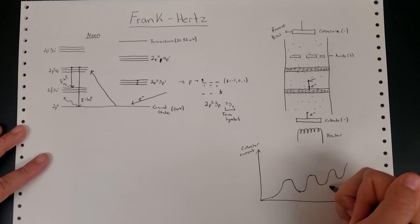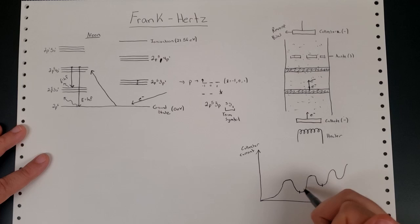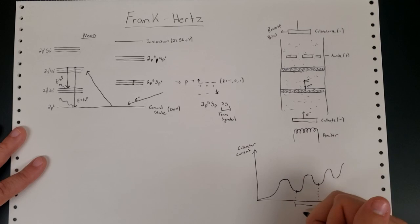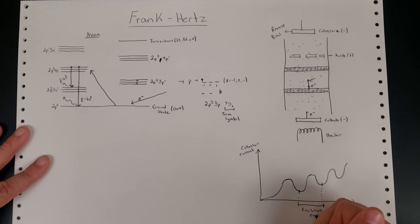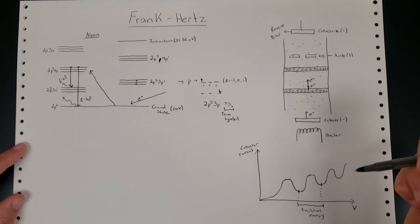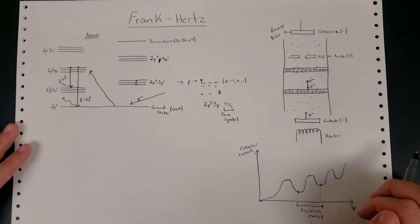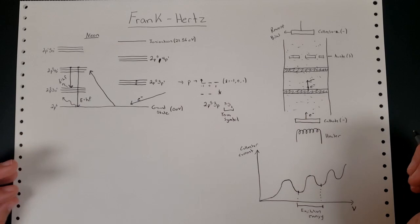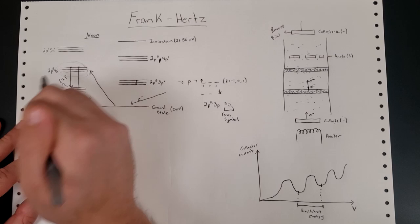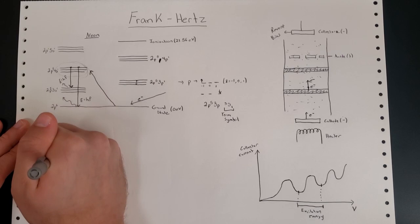From this graph, what we can determine is that the separation between any two corresponding points — for instance from one trough to another trough — is actually going to be equal to the excitation energy. It's the amount of energy we put into the neon atom in order for it to be excited — that minimum excitation energy.